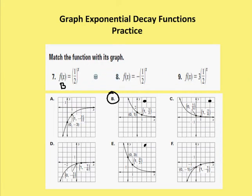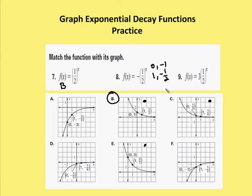For number eight, y = −(1/2)^x, I substitute x = 0: (1/2)^0 = 1, then apply the negative sign to get −1. So the point is (0, −1). At x = 1: (1/2)^1 = 1/2, and negative gives −1/2. So the point is (1, −1/2). Looking for a graph with these two points, the answer is graph F.